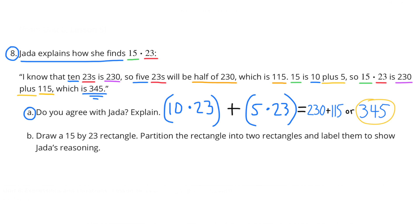A. Do you agree with Jada? Explain. 10 times 23 plus 5 times 23 equals 230 plus 115, or 345. Yes, I do agree with Jada.